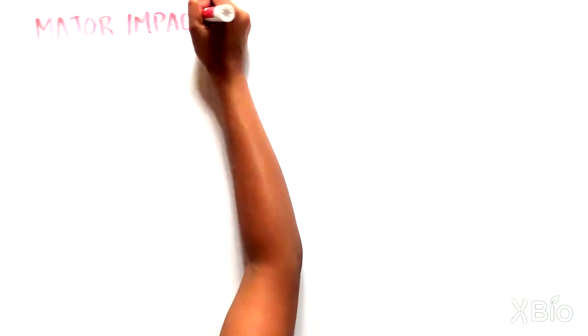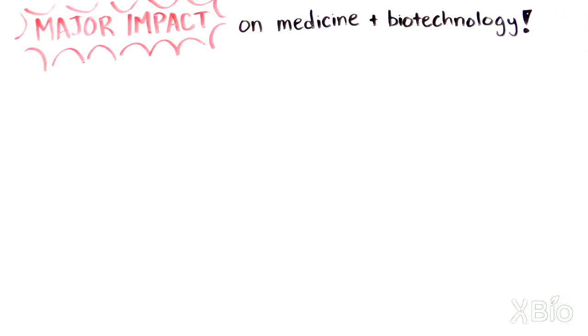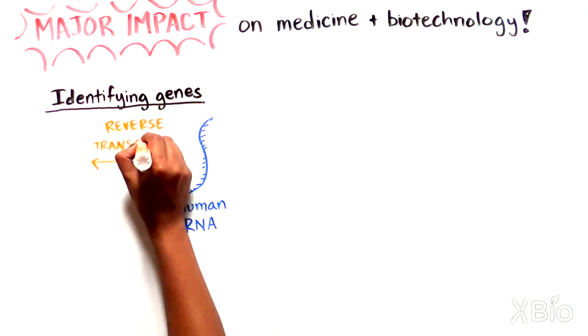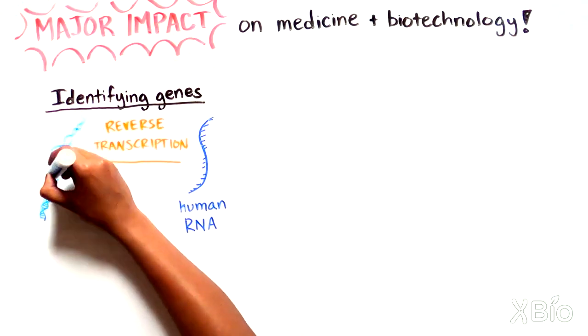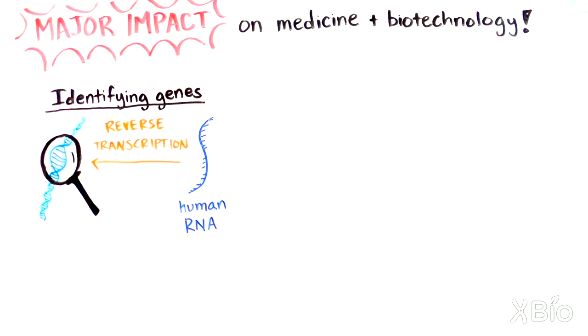Baltimore and Temin's finding had a major impact on modern medicine and biotechnology. Before the modern genomic era, the identification of most human genes involved copying human RNA into DNA by reverse transcriptase to be used for further studies.